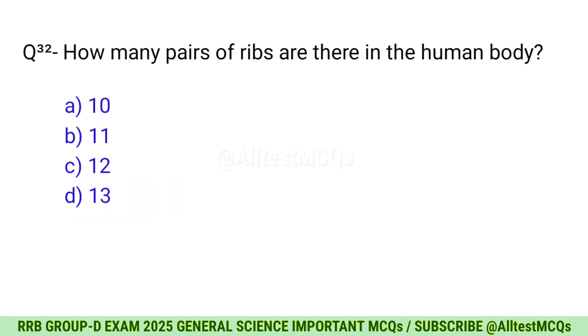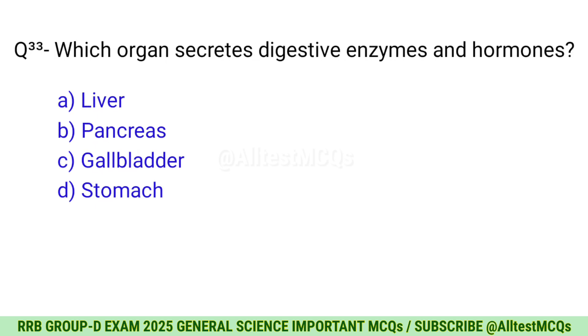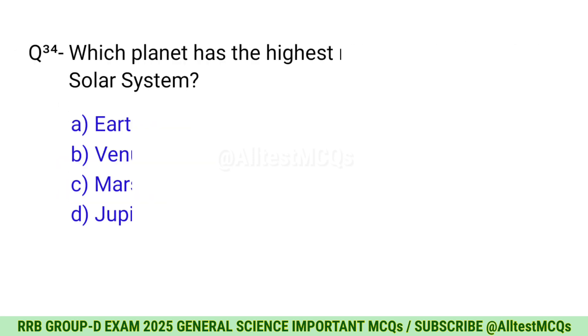Question 32: How many pairs of ribs are there in the human body? Correct option is C, 12. Question 33: Which organ secretes digestive enzymes and hormones? Correct option is B, Pancreas. Question 34: Which planet has the highest mountain in the solar system? C, Mars.